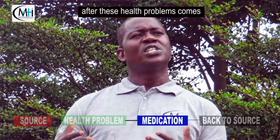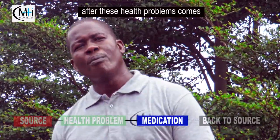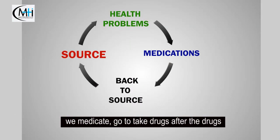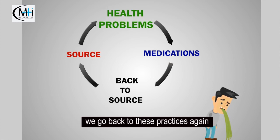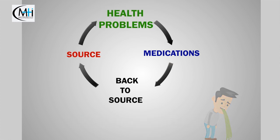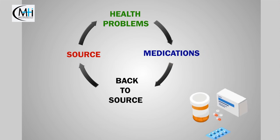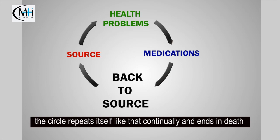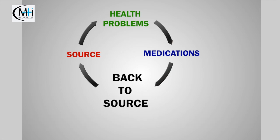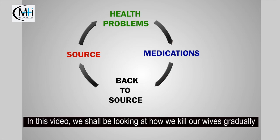After these health problems come, we medicate and go to take drugs. After the drugs, we go back to these practices again. The cycle repeats itself continually, and ends in death. In this video, we shall be looking at how we kill our wives gradually and unknowingly.